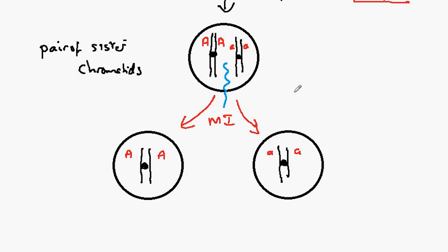So this key feature here is the separation of the homologous pair, or if we wish to think of it in terms of our genetics, then we have the separation of the alleles of a gene.